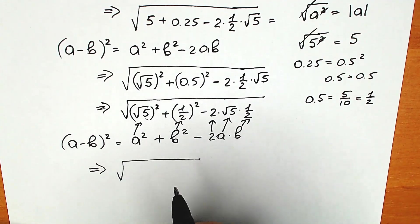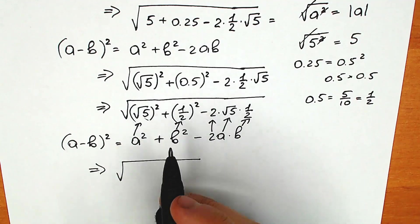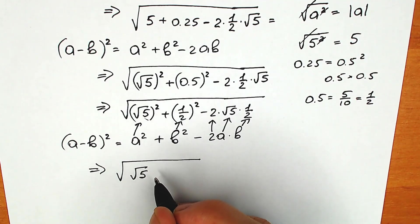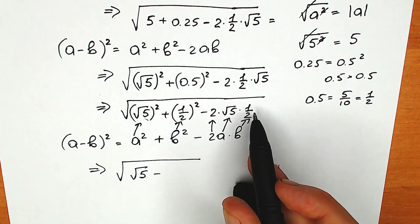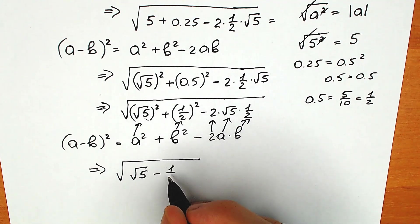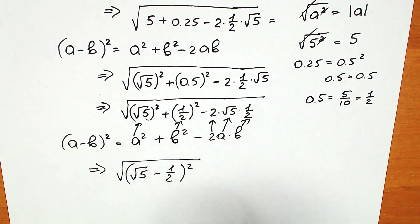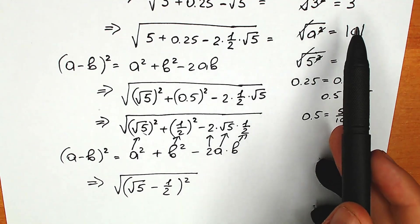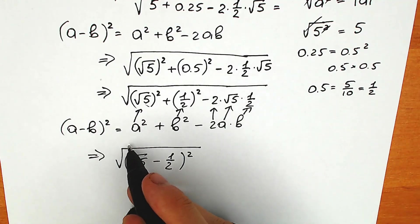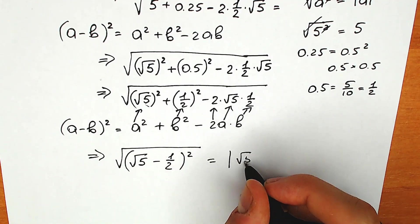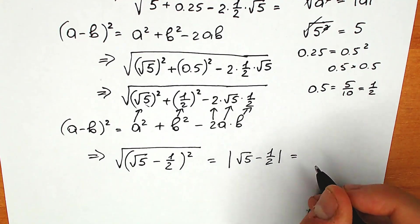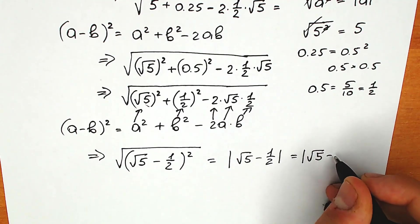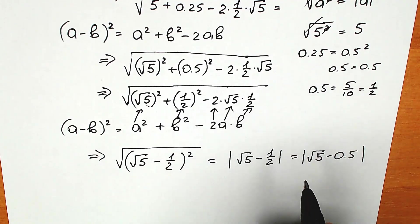So we can write it as square root of (a − b)², where a = √5 and b = 1/2. When we cancel the square root with the square, the result is the absolute value of (√5 − 1/2). So we get absolute value of (√5 − 0.5). I'll explain why we use absolute value brackets in just a minute. But first, let's solve our question completely.